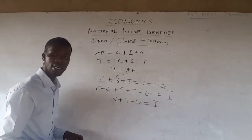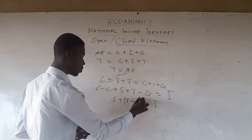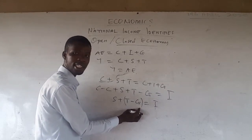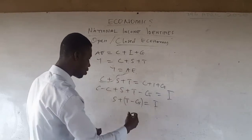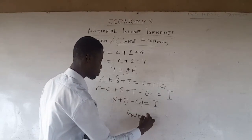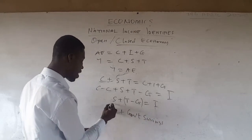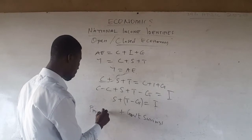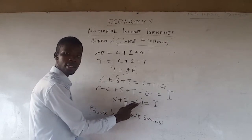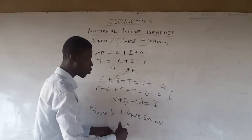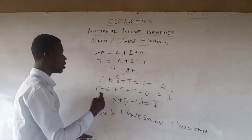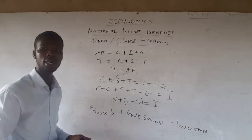We know that government revenue comes through taxes and expenditure goes through government expenditure. So the difference between tax and government expenditure gives us government savings. The S here is private savings. So we have private savings plus government savings — which is the difference between tax revenue and government expenditure — equal to investment. That is how it works using the identities for a closed economy.